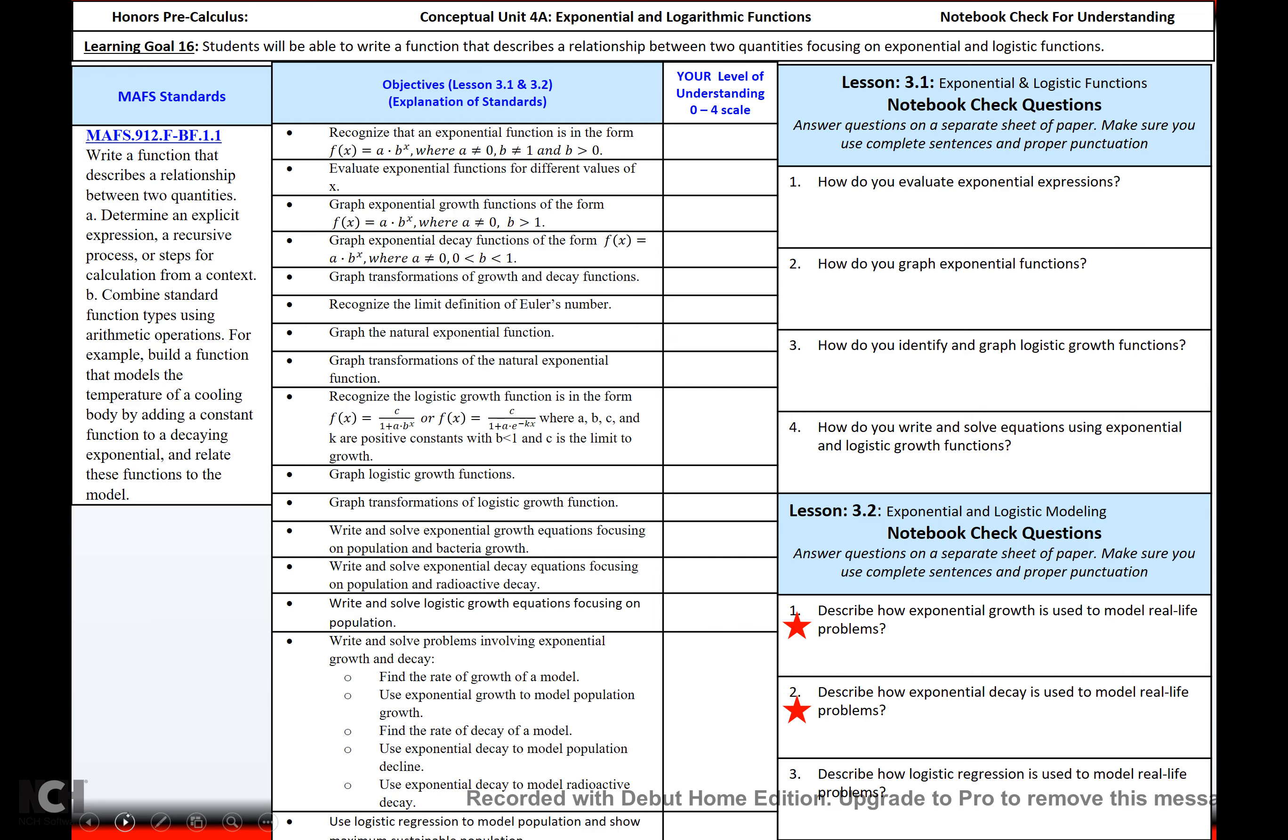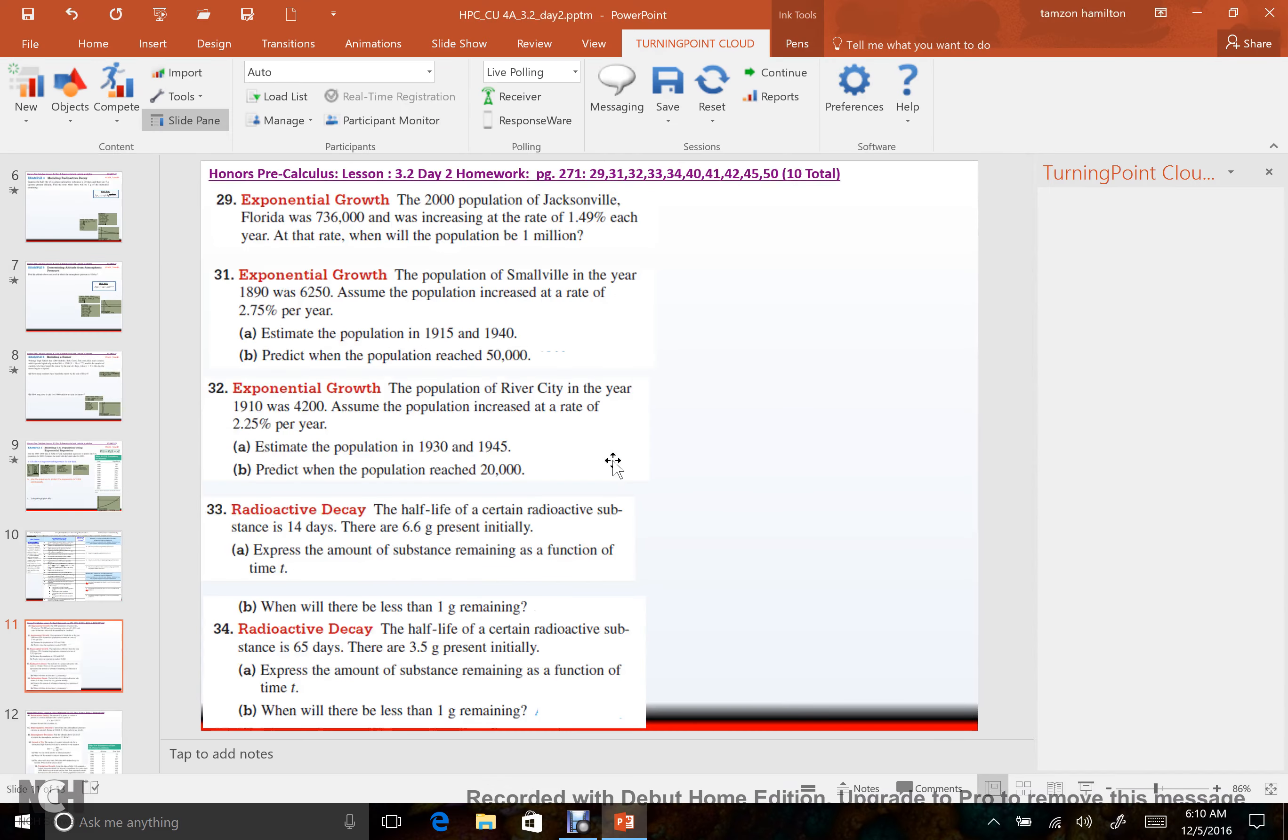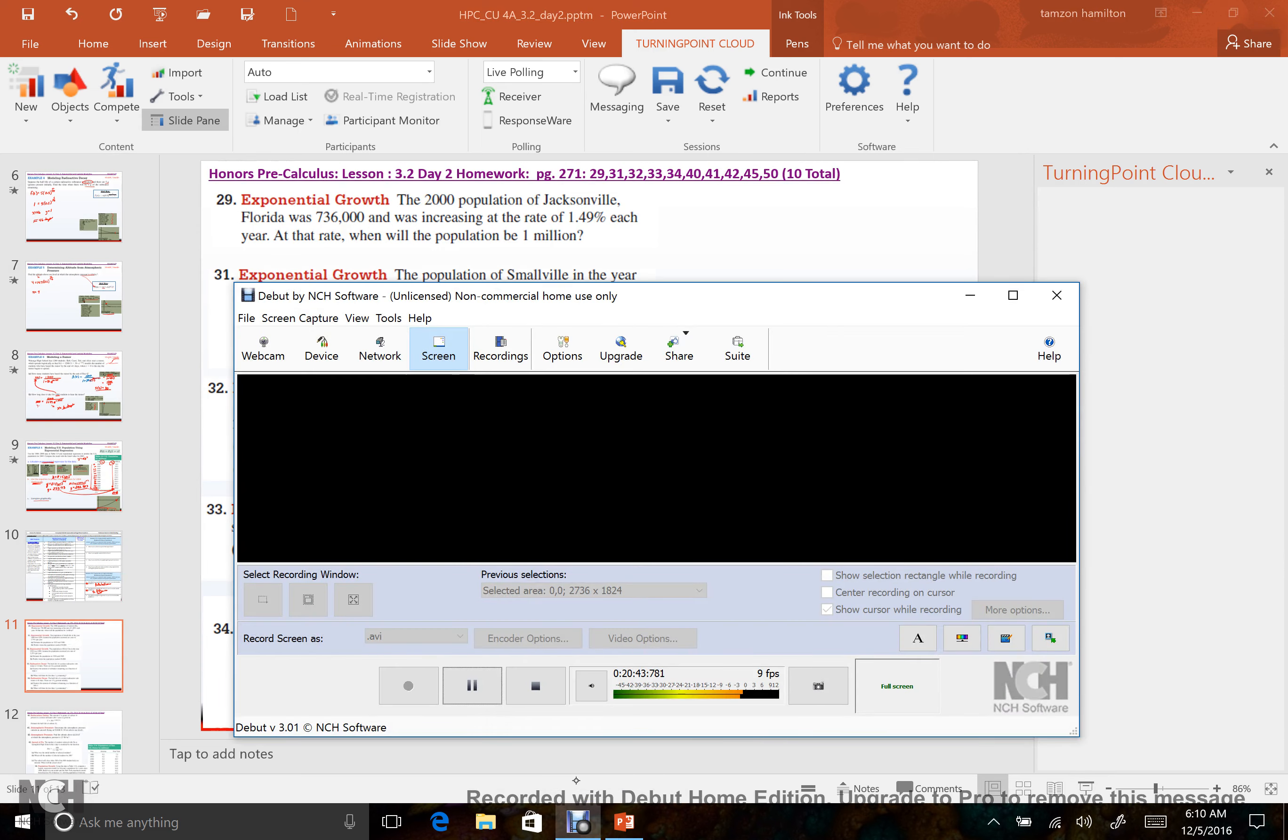So describe how exponential growth is used to model real-life problems. Population. Describe how exponential decay is used to model real-life problems. When you're talking about half-life of substances, that's where decay is used a lot. Half-life of substances, depreciation, but we didn't really do anything like that. All right, so we are at homework, which means we are done. Happy homeworking, and I will see you next time.